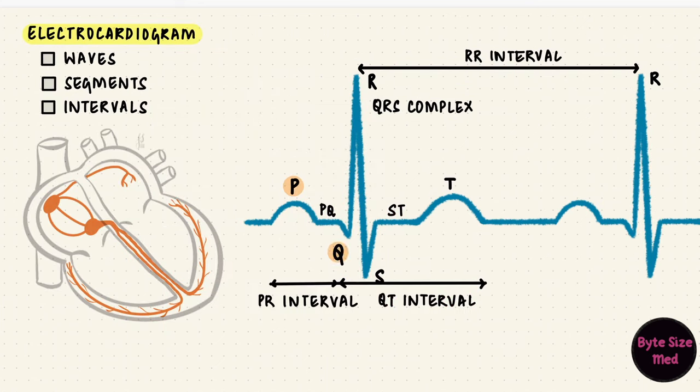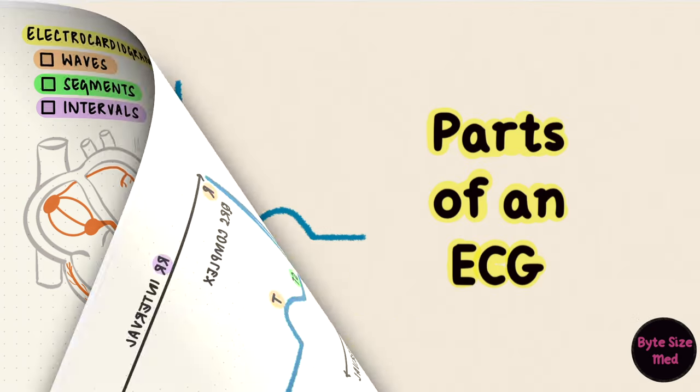So we have the P, Q, R, S, and T waves. The PR segment and the ST segment. The PR interval, the QT interval, and the RR interval. Those are the parts of a normal electrocardiogram.